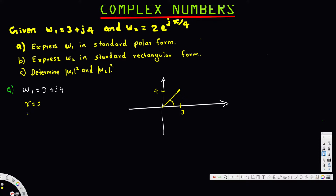To find the angle we use tan theta. Tan theta equals opposite over adjacent — opposite is 4 and adjacent is 3, so theta equals tan inverse of 4 over 3. If you calculate that angle you get 0.9255 radians. So this is our angle.